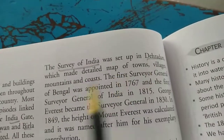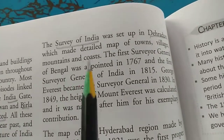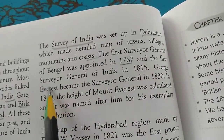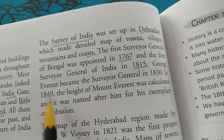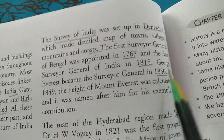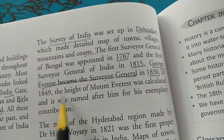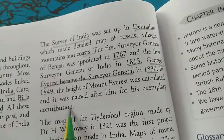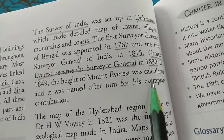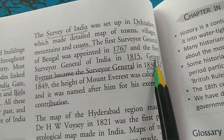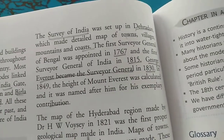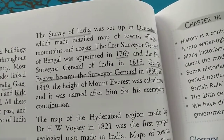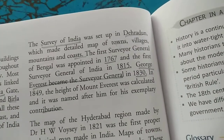The first Surveyor General of Bengal was appointed in 1767, and the first Surveyor General of India in 1815. George Everest became the Surveyor General in 1830. In 1849, the height of Mount Everest was calculated and named after him for his exemplary contribution — that is why it is called Mount Everest today.